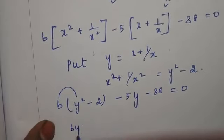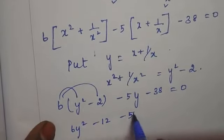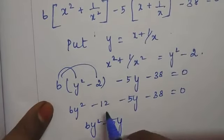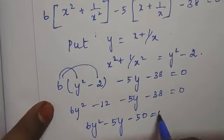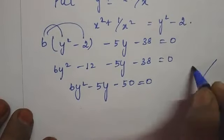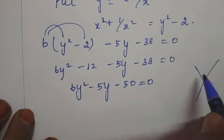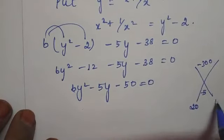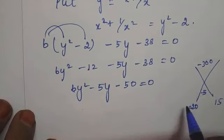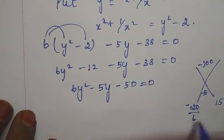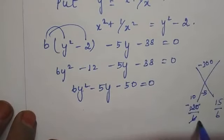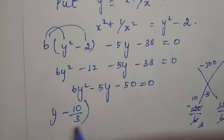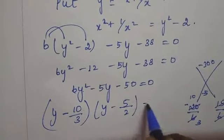Substituting: 6(y² - 2) - 5y - 38 = 0. Expanding: 6y² - 12 - 5y - 38 = 0, which gives 6y² - 5y - 50 = 0. Using the factor method: 6 × (-50) = -300, and we need factors -5 = 20 - 15 (actually the split gives factors), leading to y = 10/3 and y = -5/2, so (y - 10/3)(y + 5/2) = 0.